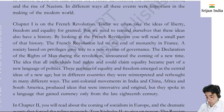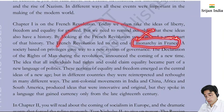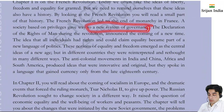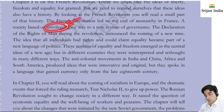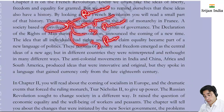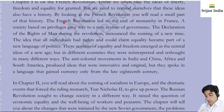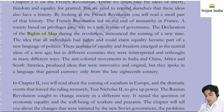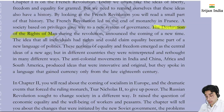The French Revolution led to the end of monarchy - the kingship that was running ended. A society based on privileges gave way to a new system of governance. Earlier people had certain rights by birth, by post, or by religion - these were privileges. The Declaration of the Rights of Men announced the coming of a new time. The idea that all individuals had rights and could claim equality became part of a new language of politics.